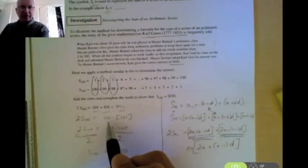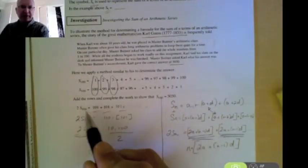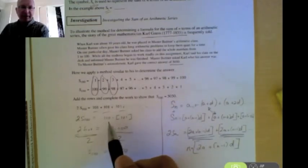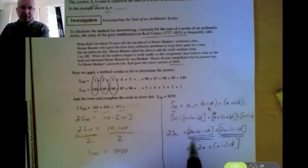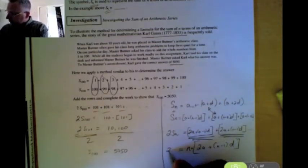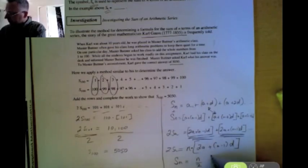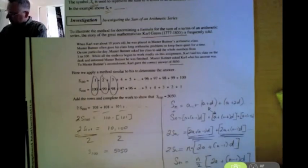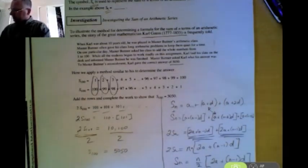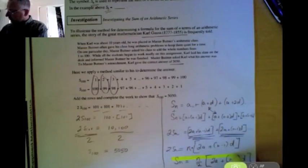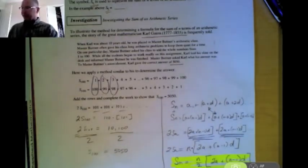Just like here, we had 100 terms in this series. We multiplied our 101 by 100. Here we're multiplying our 2A plus N minus 1D times the number of terms. So to get our final formula, we have to divide each side by 2. So we get N divided by 2 times 2A plus N minus 1D. And this actually is one of the formulas for finding the sum of an arithmetic series.